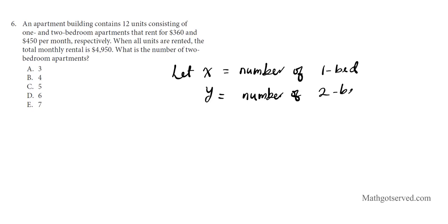Let's go ahead and set up the equation. We know that the total number of units available is 12. The 1 bedrooms and the 2 bedrooms add together to give you 12 units because each of these count as 1 unit. So first equation we'll have is x plus y equals 12.